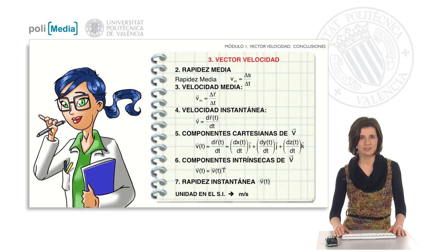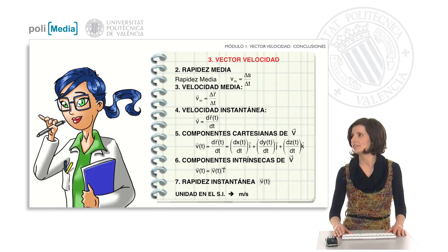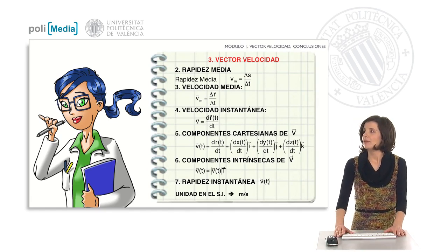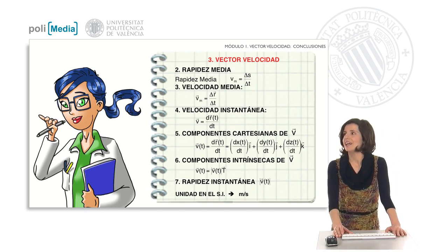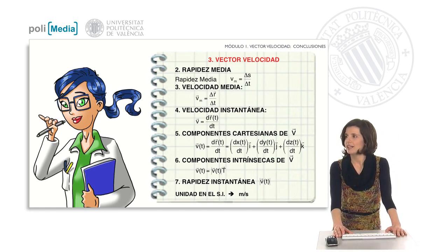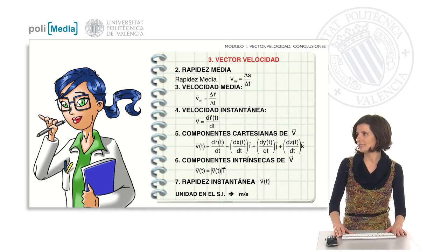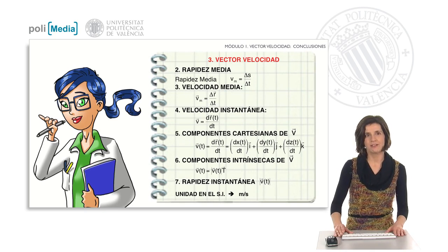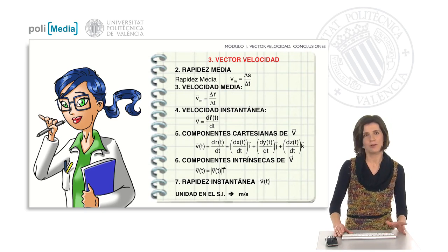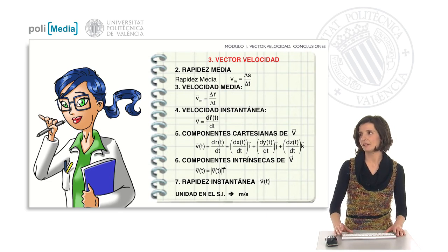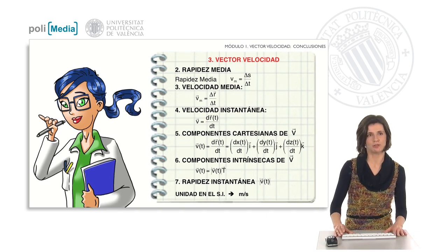Now it's time for Amanda to remind us of the most important things we've seen in class. We have seen that average speed is a scalar physical quantity relating the path traveled over the trajectory (increment of s) and the time spent (increment of t). Although people usually refer to this quantity as velocity, the term velocity in physics is reserved for a vector quantity. There are two types of velocity vectors: average velocity and instantaneous velocity.